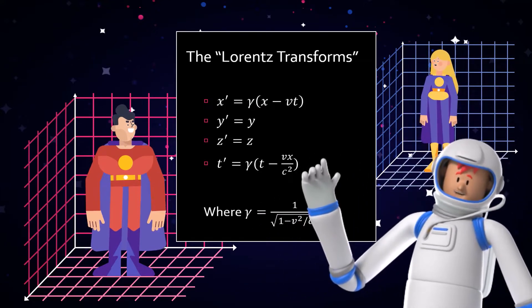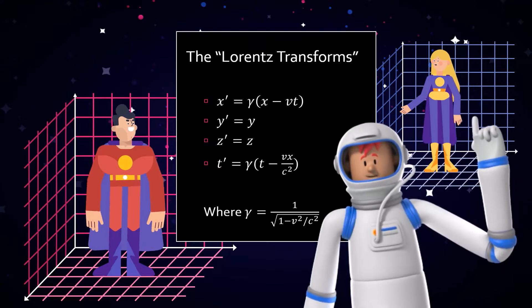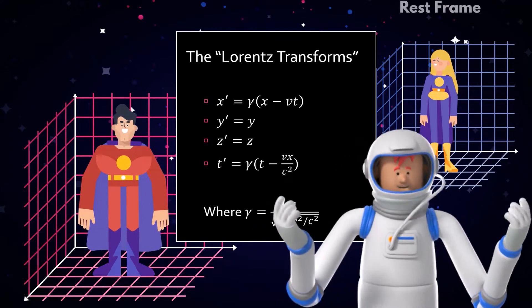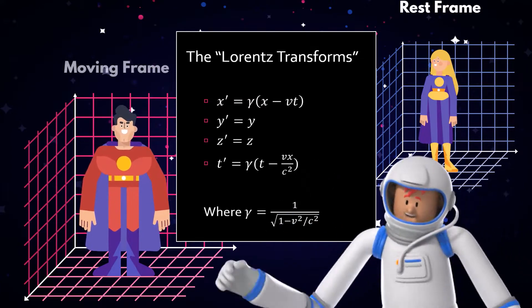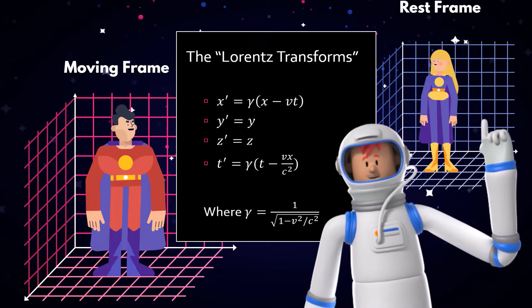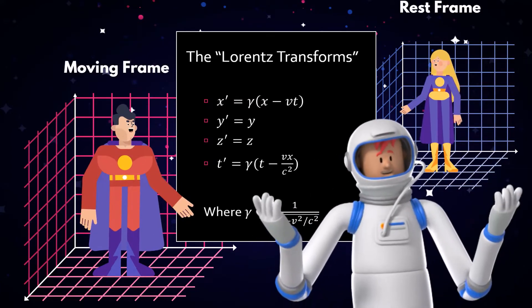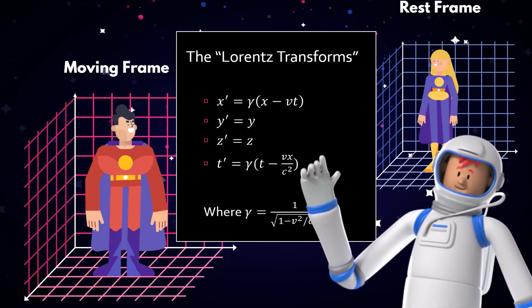In relativity, there's no absolute time and space, and so we can choose either frame to be at rest and consider the other frame to be moving at some relative velocity, v. The equations work just as well in either direction simply by reversing the sign of the velocity.